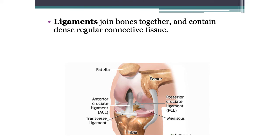Ligaments join bones together and contain dense connective tissue. We can see the ACL pointed to in the front and the PCL in the back. The MCL and LCL are not labeled in this image, but you can see them depending on which side of the leg. Based on not being able to see the fibula, you can't tell which is medial and which is lateral.